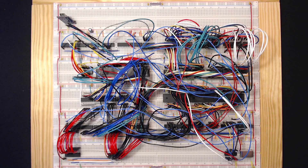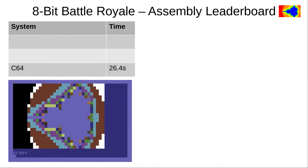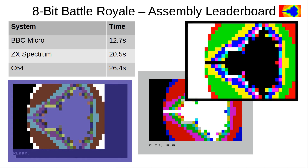But let's start with a look at the current leaderboard. At the tail end we have the Commodore 64 using 26.4 seconds for this gauntlet run. Next comes the ZX Spectrum with 20.5 seconds, and in first place the BBC Micro, finishing impressively with only 12.7 seconds on the clock.